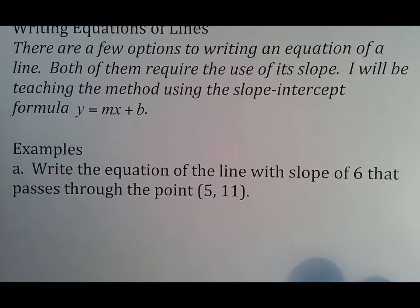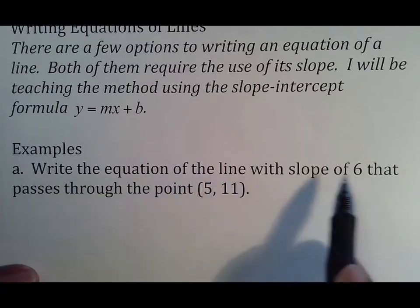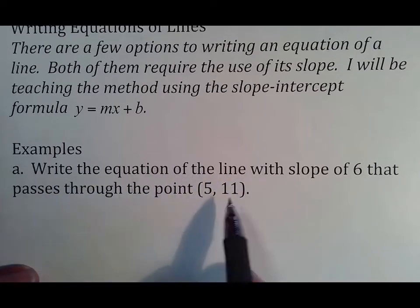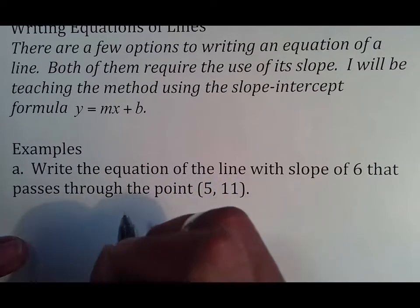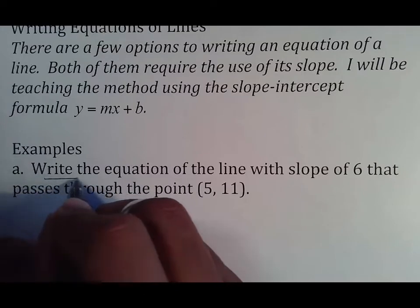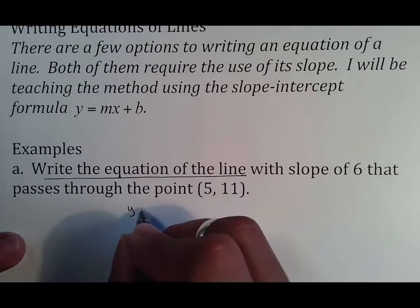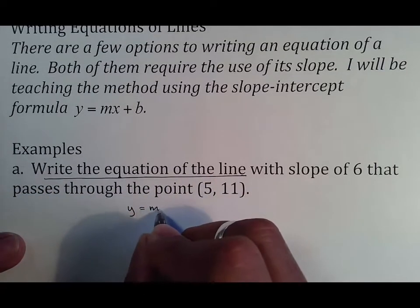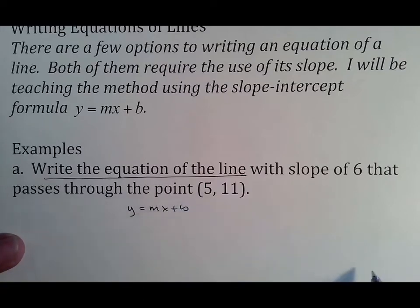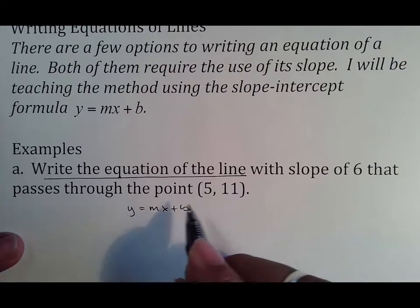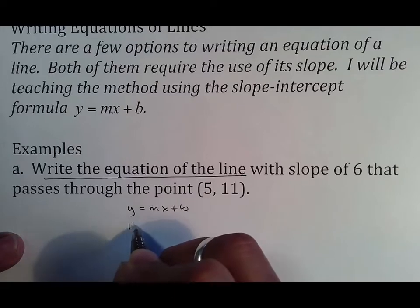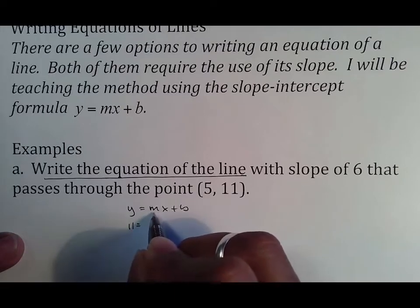Here's how it works. Write the equation of a line with a slope of 6 that passes through the point (5, 11). Anytime you want to write the equation of a line, make sure you note this: simply write the formula y = mx + b, then plug in what you know. y is 11, m (slope) is 6.